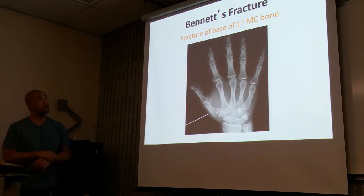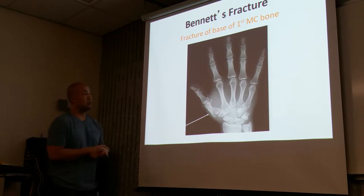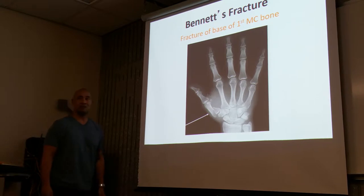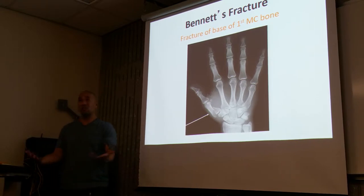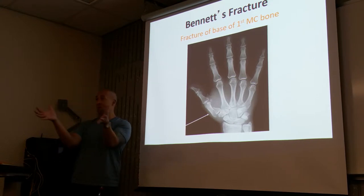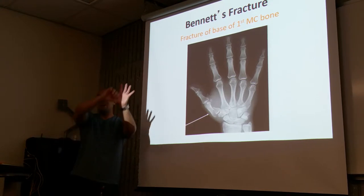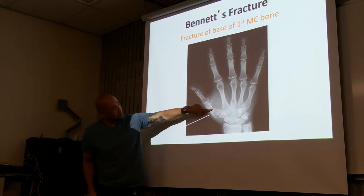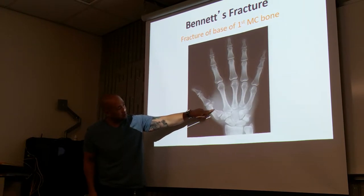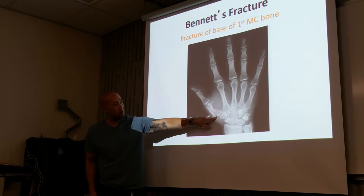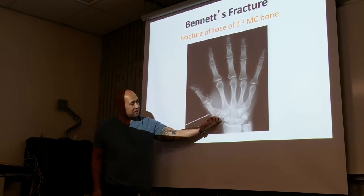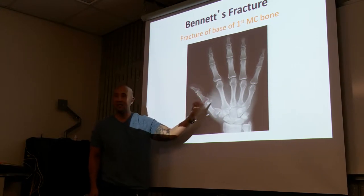Here we have the Bennett's fracture — a fracture of the base of the first metacarpal bone. Another name for Bennett's is the skier's fracture. Skiers with their poles and straps around their thumbs — when they lose their pole, it pulls on the thumb causing this particular break. You can see the break is linear, and there's a displacement going distally from the base.